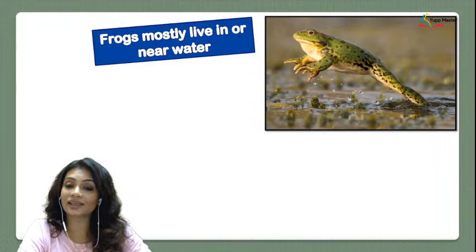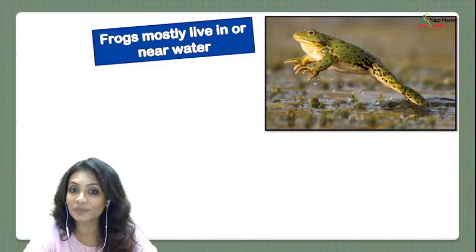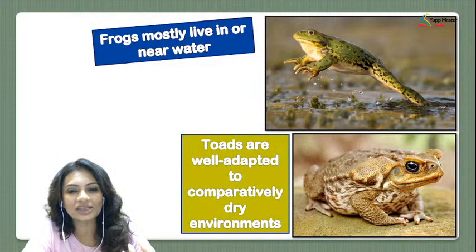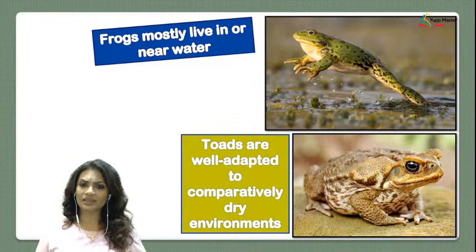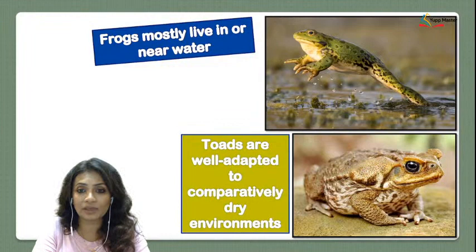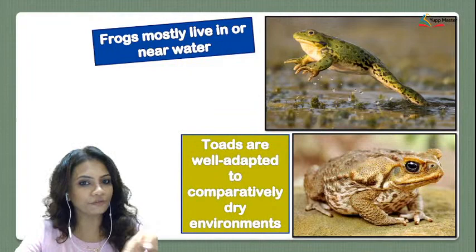Many students ask about the difference between frogs and toads. Frogs mostly live in water or nearby water — they're amphibians. Toads are mostly found in drier environments, not near too much water. The size of a toad is generally bigger and its skin is drier compared to a frog. Frogs have moist, sticky, slimy skin, whereas toads have dry and slightly rough skin.